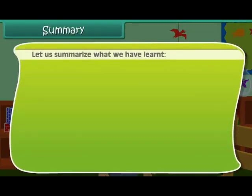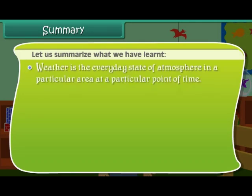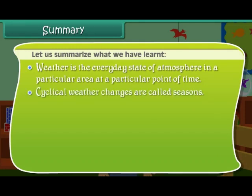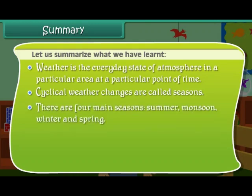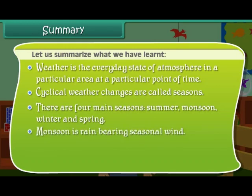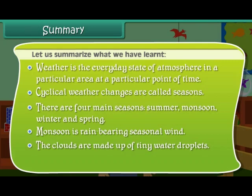Let us summarize what we have learned. Weather is the everyday state of atmosphere in a particular area at a particular point of time. Cyclical weather changes are called seasons. There are four main seasons: summer, monsoon, winter and spring. Monsoon is a rain bearing seasonal wind. The clouds are made up of tiny water droplets. Wind is moving air.